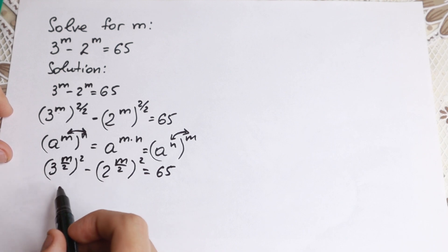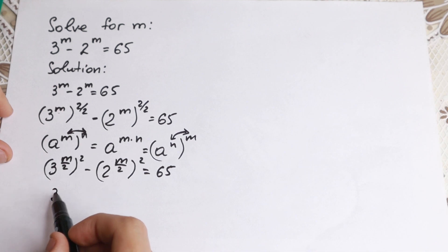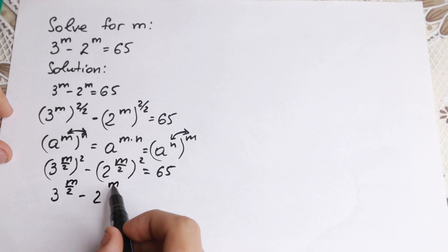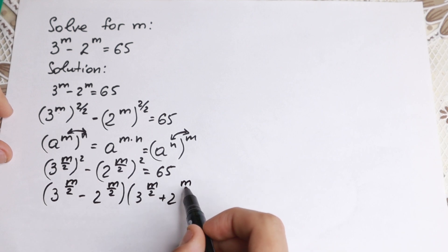Identity formula, a square minus b square. We even know this formula. We can easily write it, split it into an identity. We will have 3 to the power m over 2 minus 2 to the power m over 2, and 3 to the power m over 2 plus 2 to the power m over 2.